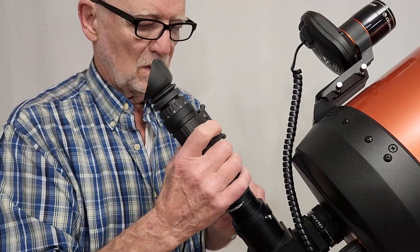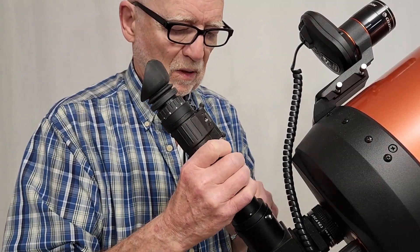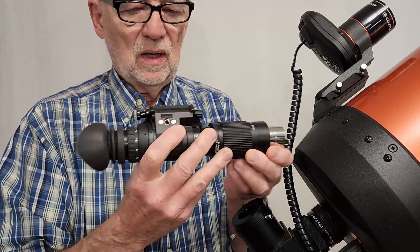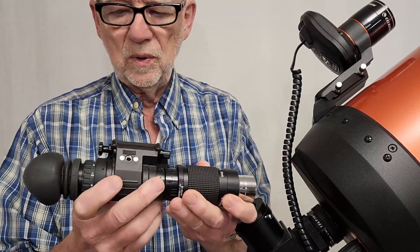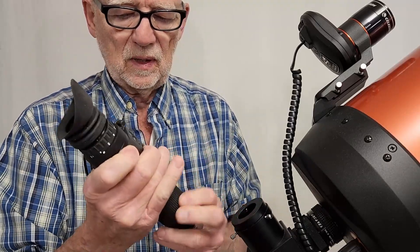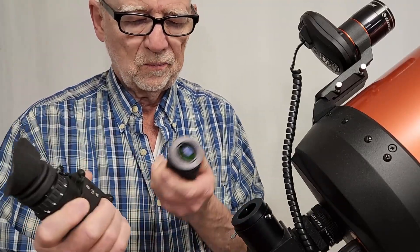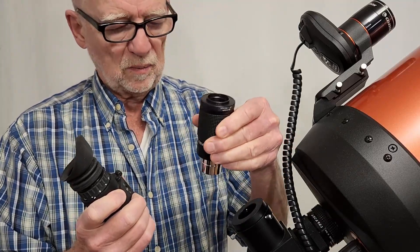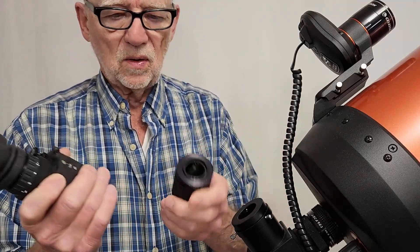This device here is basically a very fancy eyepiece, and it's in essentially two pieces. This is called an image intensifier. Let me take this part off. This is a more or less standard Celestron eyepiece, inch and a quarter eyepiece. Works like most any other eyepiece.